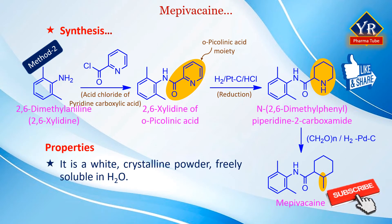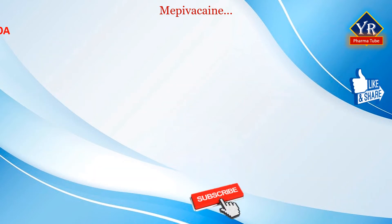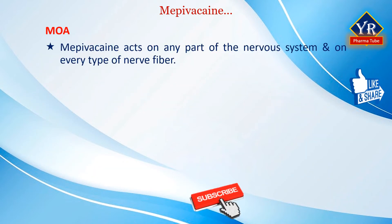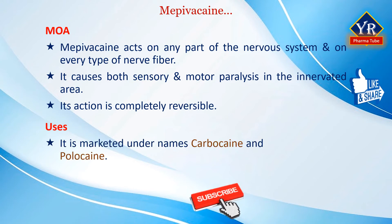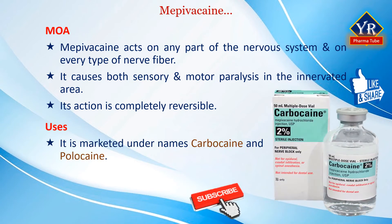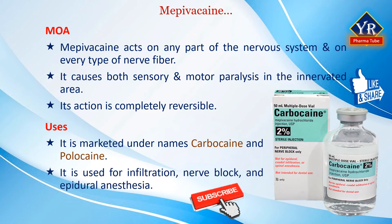Mepivacaine is a white crystalline powder and is freely soluble in water. It acts on any part of the nervous system and on every type of nerve fiber. In contrast with a nerve trunk, it can cause both sensory and motor paralysis in the innervated area, and its action is completely reversible. It acts by reducing the tendency of voltage-dependent sodium channels to activate. Mepivacaine is marketed under trade names including Carbocaine and Polocaine. It is indicated for infiltration, nerve block, and epidural anesthesia. It is not effective as a topical anesthetic due to its toxicity to neonates, and thus is not used in obstetrical anesthesia.